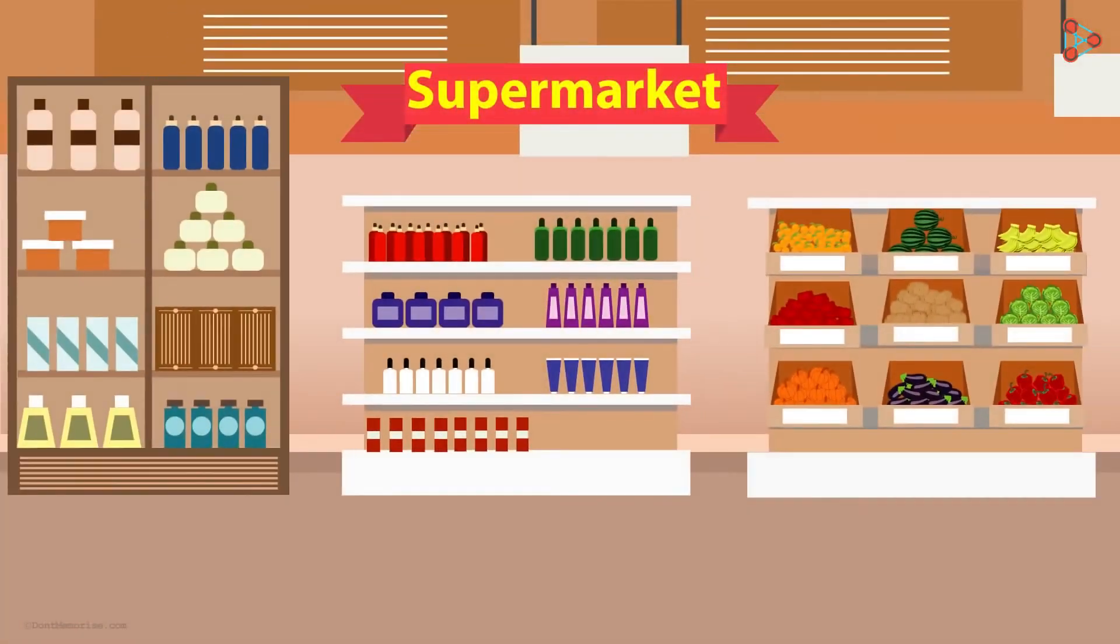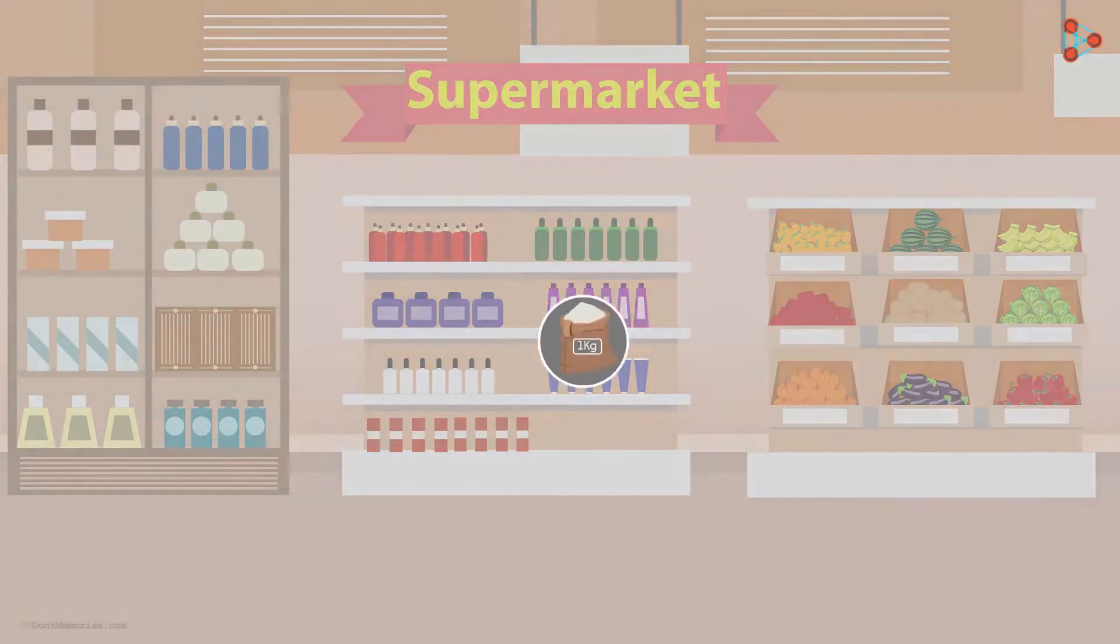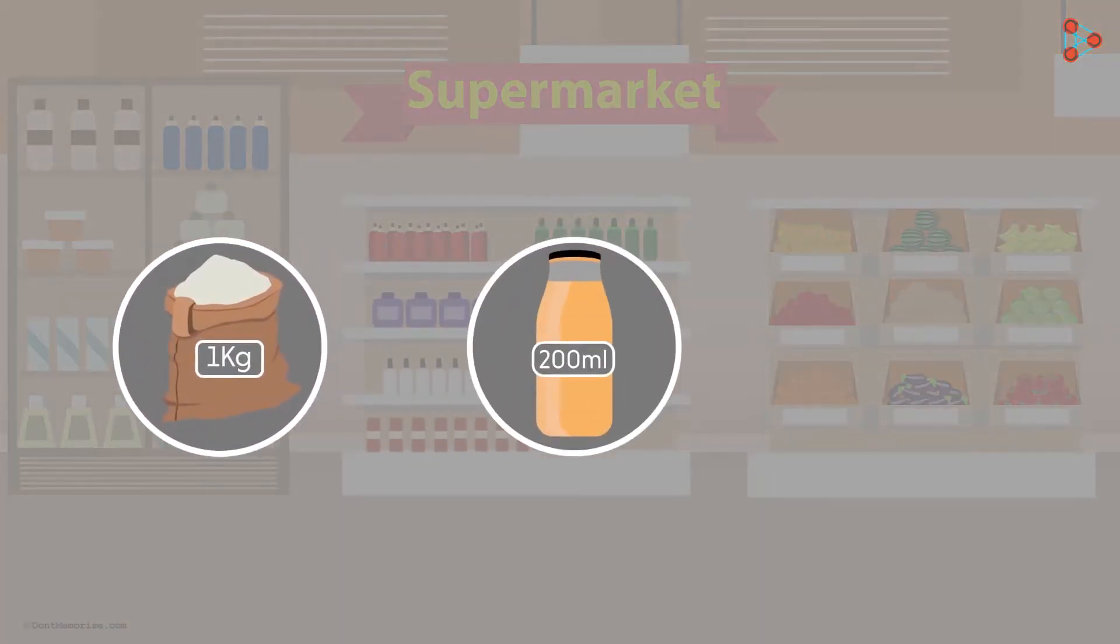When we go to a supermarket, we always buy things using standard values. In other words, we always take 1 kilogram of rice or 200 milliliters of fruit juice.